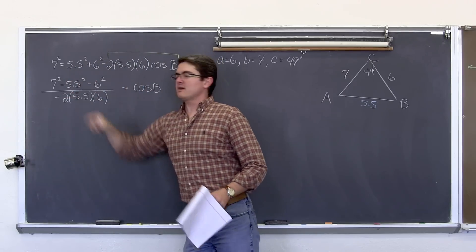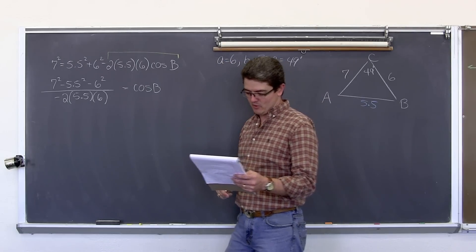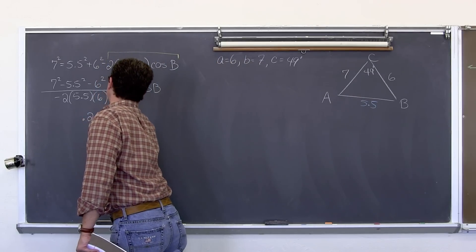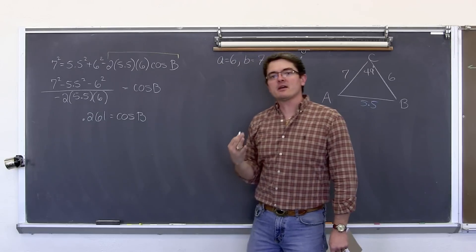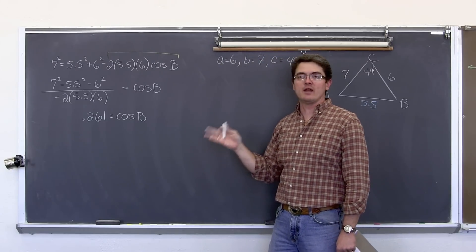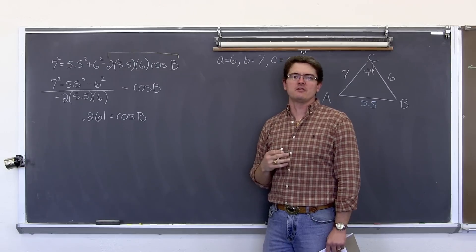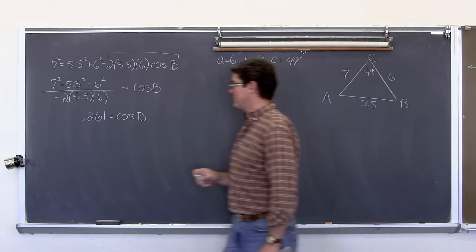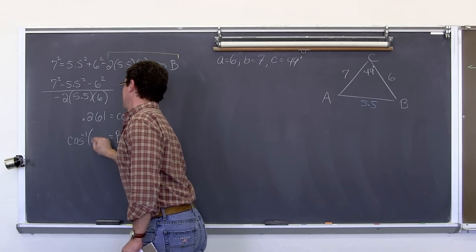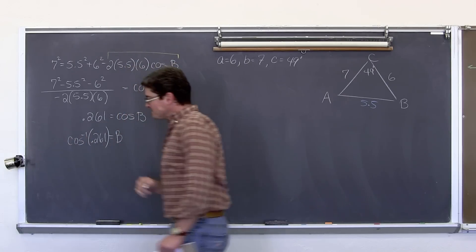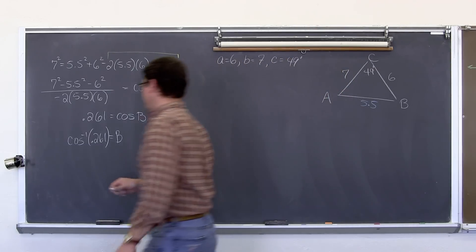Now when you get this put into your calculator all at once, or in pieces, it should come out to be 0.261 equals the cosine of B. Now that cosine function has to get moved away from B. And what is the opposite of the cosine function? How do you undo the cosine function? You do the inverse cosine function. So B is equal to the inverse cosine of 0.261. Put that into your calculator. Make sure it is in degree mode. And you are going to get 74.9 degrees.